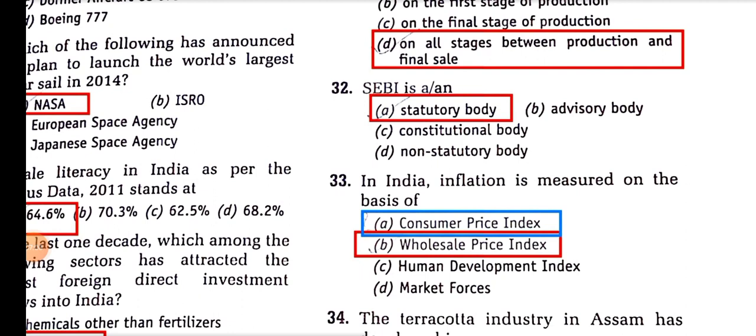A statutory body means a body established after an Act of Parliament. A constitutional body is one mentioned in the Constitution, like the Finance Commission or the Election Commission of India. Non-statutory bodies are those not created by any Act.